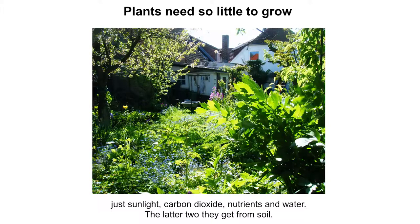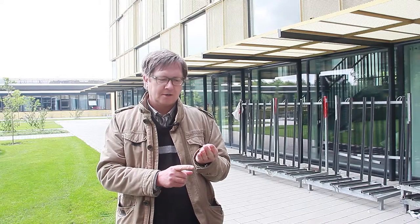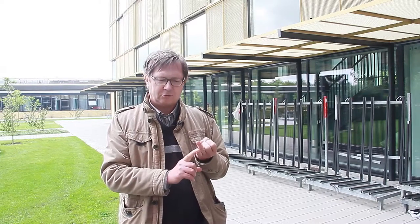Plants need so little to grow. They need carbon dioxide, sunlight, water, and nutrients — and that's it. The latter two, water and nutrients, they get from soil.